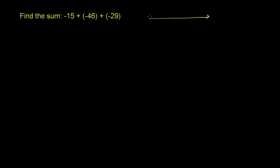Negative 15 might look something like this. If this is 0 and this is negative 15, I could represent negative 15 as an arrow that points from 0 to negative 15. The length of the arrow is the absolute value — the distance from 0. So the length here is 15, and the negative sign means we are pointing to the left.